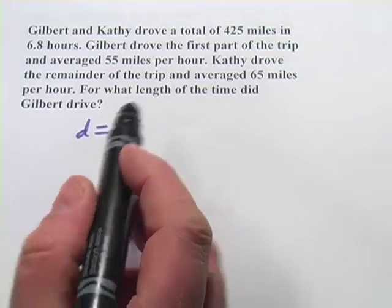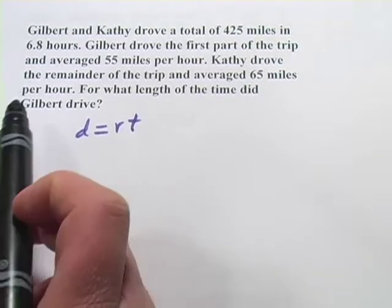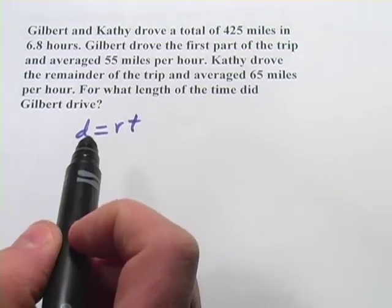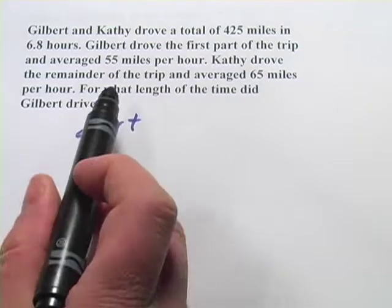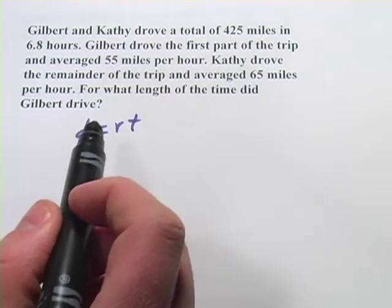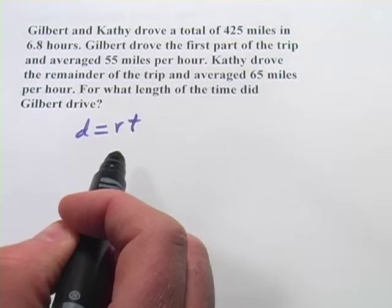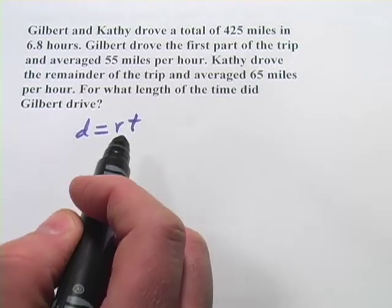It says Gilbert and Kathy drove a total of 425 miles in 6.8 hours. Gilbert drove the first part of the trip and averaged 55 miles per hour. Kathy drove the remainder of the trip and averaged 65 miles per hour. For what length of time did Gilbert drive?